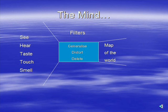I want to introduce you to a model in NLP — a very useful model called Eye Accessing Cues. Eye Accessing Cues are essentially a way of finding out how a person reveals their thought processes through their eye movements. This is tremendously useful because the more that you know about what's going on inside someone's mind, the more influence you can have over it, and the more rapport you can develop with the person.